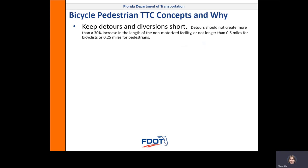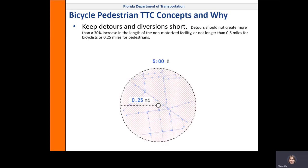The next concept is to keep bicycle and pedestrian detours and diversions short. Detours should not create more than a 30% increase in the length of the non-motorized facility, or not longer than a half a mile for bicyclists or a quarter mile for pedestrians. Most bicycle trips in the U.S. are five miles or less, and most pedestrian trips in the U.S. are a quarter mile or less. Pretty quickly, a detour or diversion can double or triple the pedestrian or person biking's trip length. If a pedestrian or bicyclist perceives the detour or diversion to be too long, then they are more likely to do something risky — for a pedestrian that could be crossing mid-block without a crosswalk, and for a bicyclist that could be squeezing in between construction barrels and a travel lane.